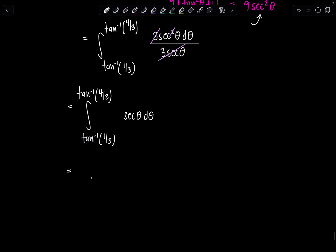Do you remember the antiderivative of secant theta? Oh, good. It's natural log, absolute value, secant theta plus tan theta. And then this is all going to get evaluated from tan inverse of 1 third to tan inverse of 4 thirds.